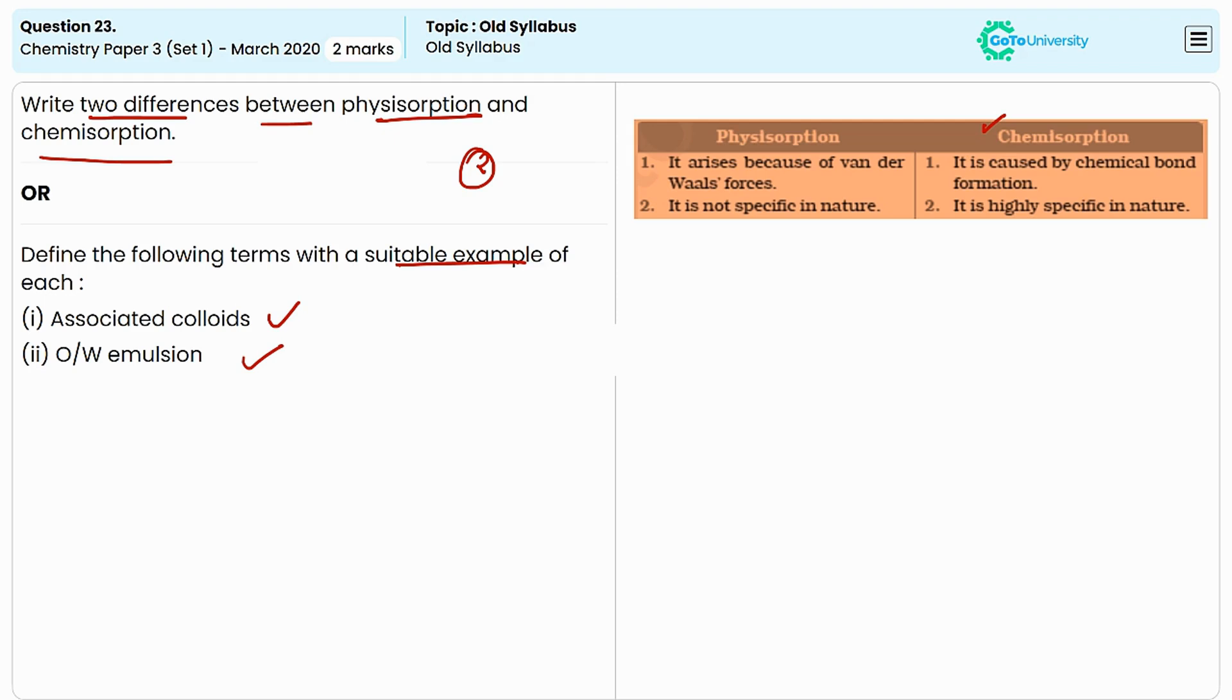Water is the continuous phase, forming the bulk of the emulsion. Emulsifiers or surfactants are used to stabilize the emulsion by reducing the surface tension between oil and water phases.